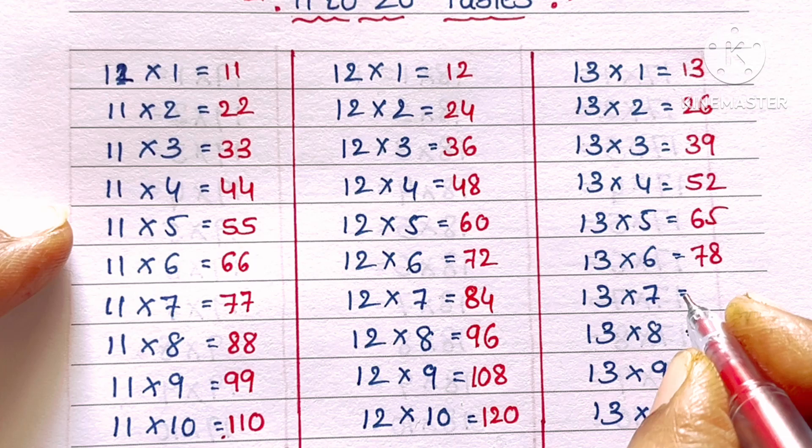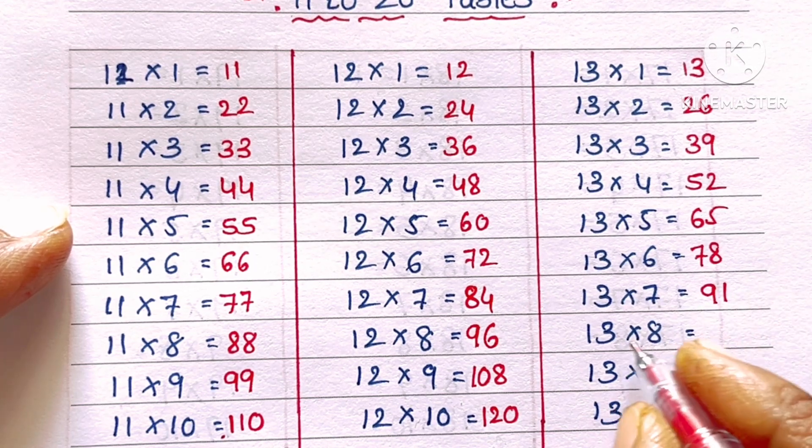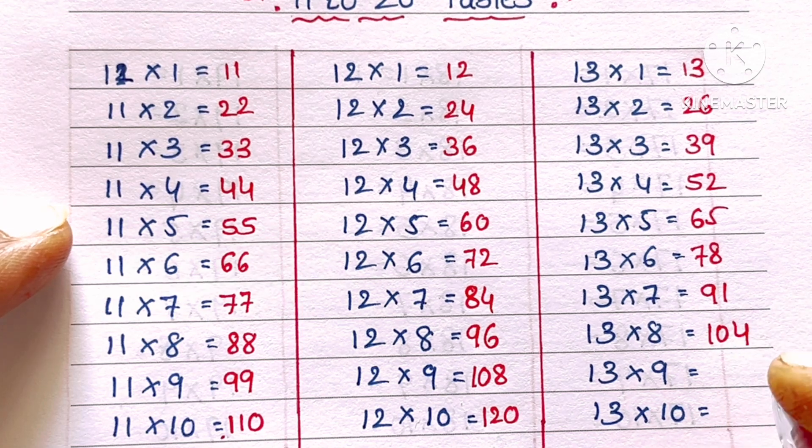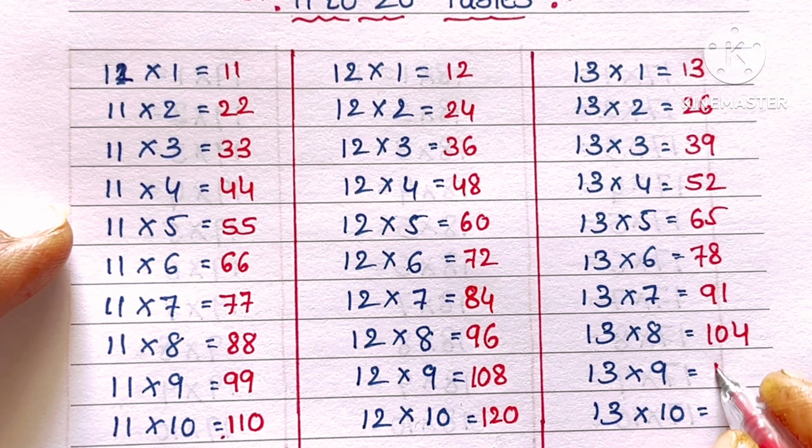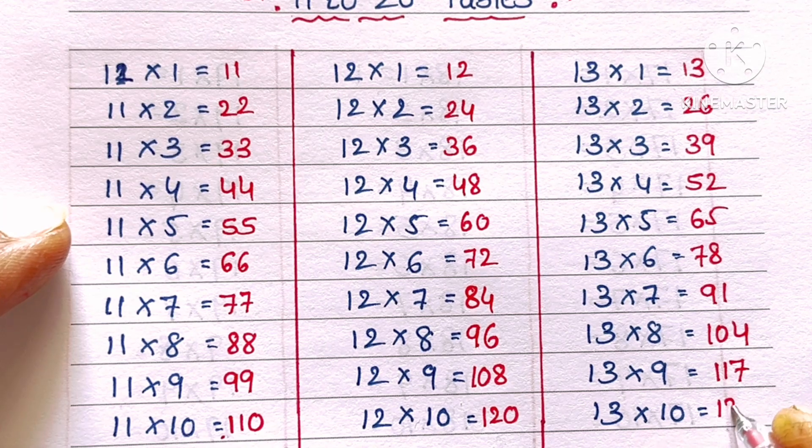13 sevens are 91, 13 eights are 104, 13 nines are 117, 13 tens are 130.